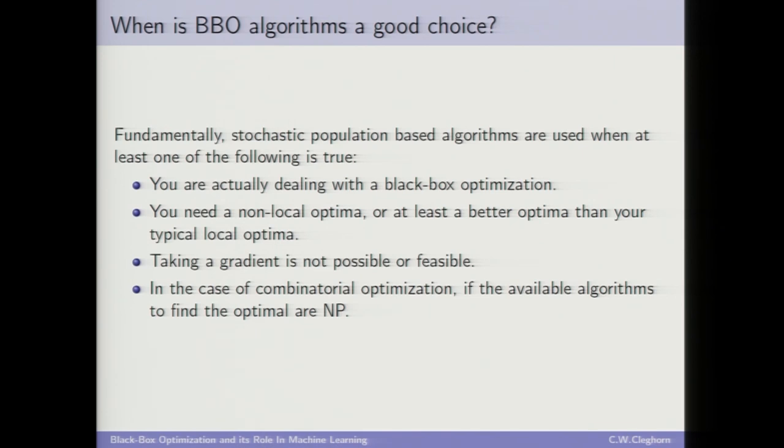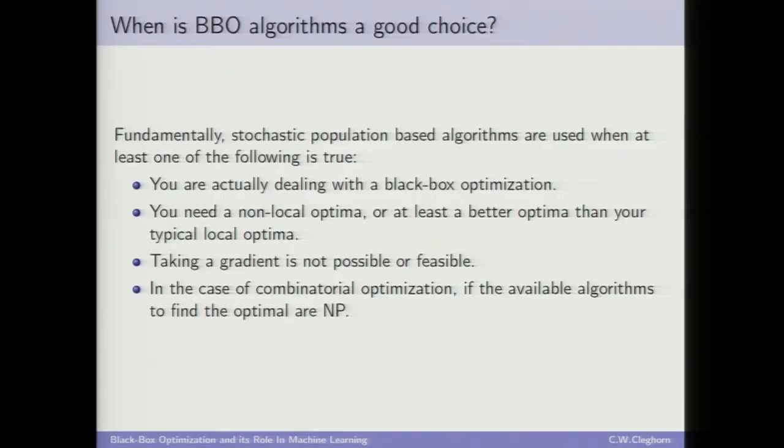Classical approaches like branch and bound try to find global optima but are very computationally inefficient. In our context, the cost is measured by the number of times you query the function — that's your computational budget. The other situation is if taking a gradient is not possible or infeasible, perhaps too computationally expensive or if you're optimizing a complicated PDE. Lastly, particularly in combinatorial optimization, you'd use these algorithms when the known algorithms for finding optimal solutions are NP — like the traveling salesman problem.